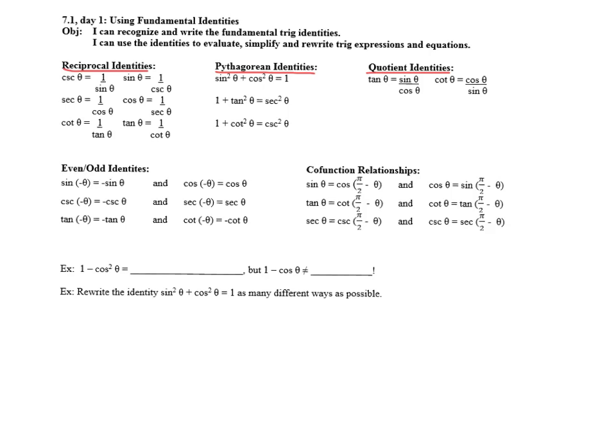We have a new set of identities called odd-even identities, or even-odd. What this means is if you have a negative rotation, which would be a clockwise rotation, it can affect your positive or negative output value just depending on which trig function you're using.